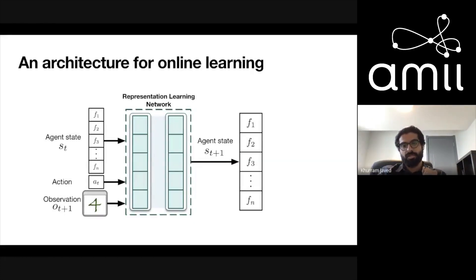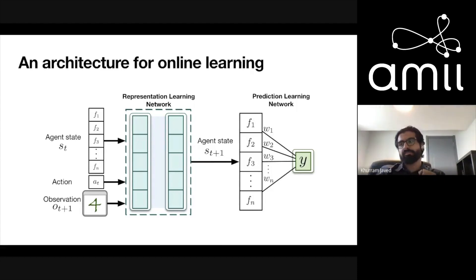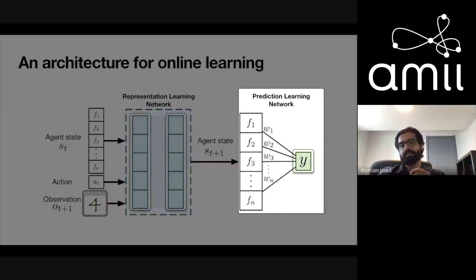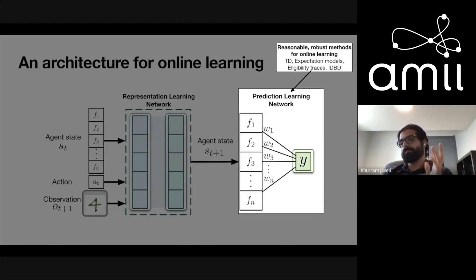That's what I call representation learning. The agent can use this state to predict different things — I call that a prediction learning network — so it can predict a value, a one-step target, actions, or a model. My claim is that we already have decent online learning methods for prediction learning: given a state representation you can do interesting things. Examples include TD learning, expectation models, eligibility traces, or 8-bit methods for optimizing the learning rate.